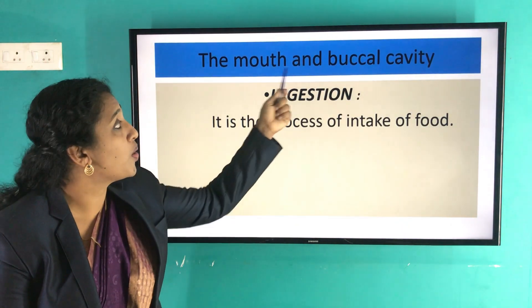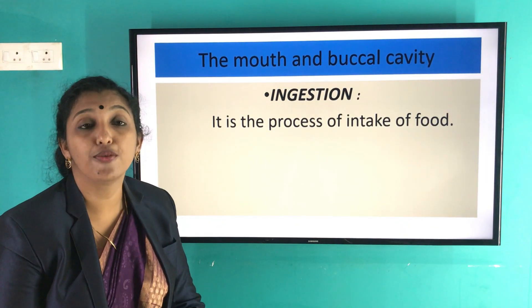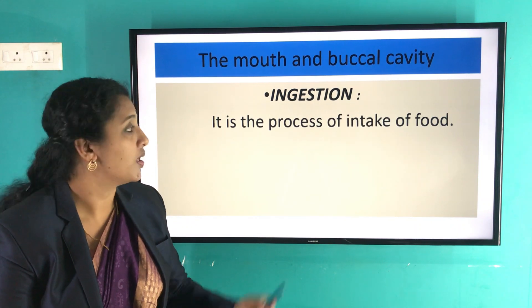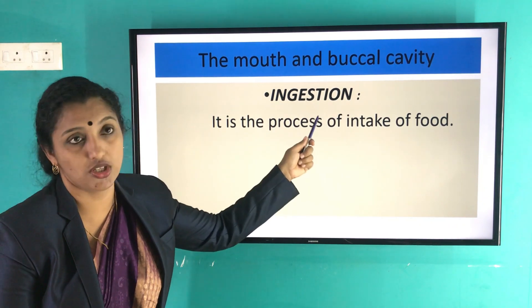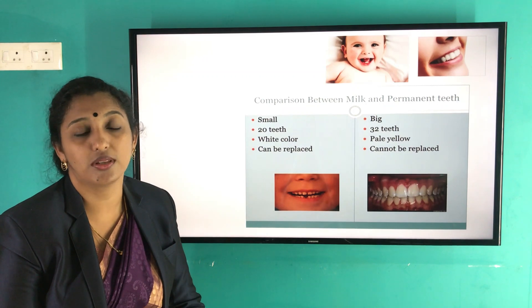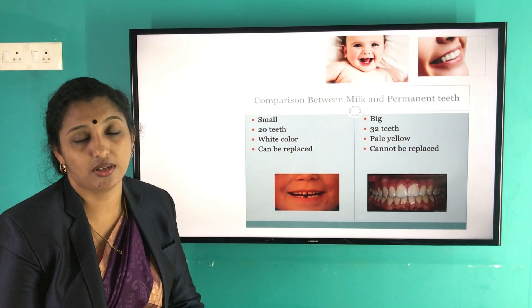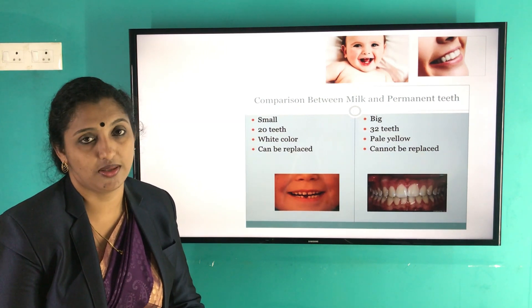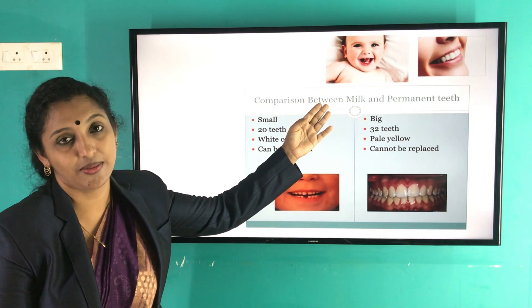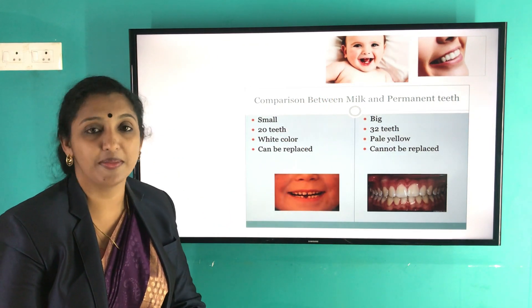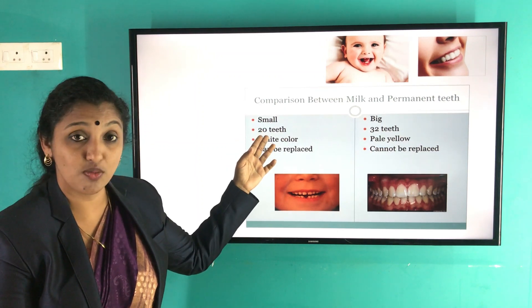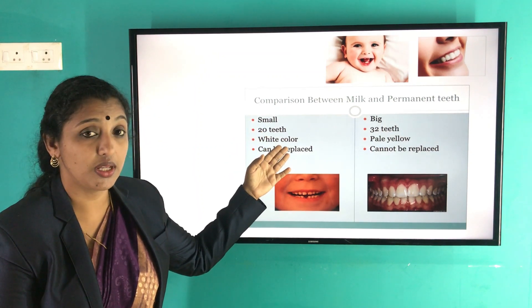The first part is the mouth and the buccal cavity. Food is taken into the body through the mouth — that process is known as ingestion. Different organs present inside the mouth help in digestion. The first one is teeth. Children have milk teeth, which are very small, 20 in number.